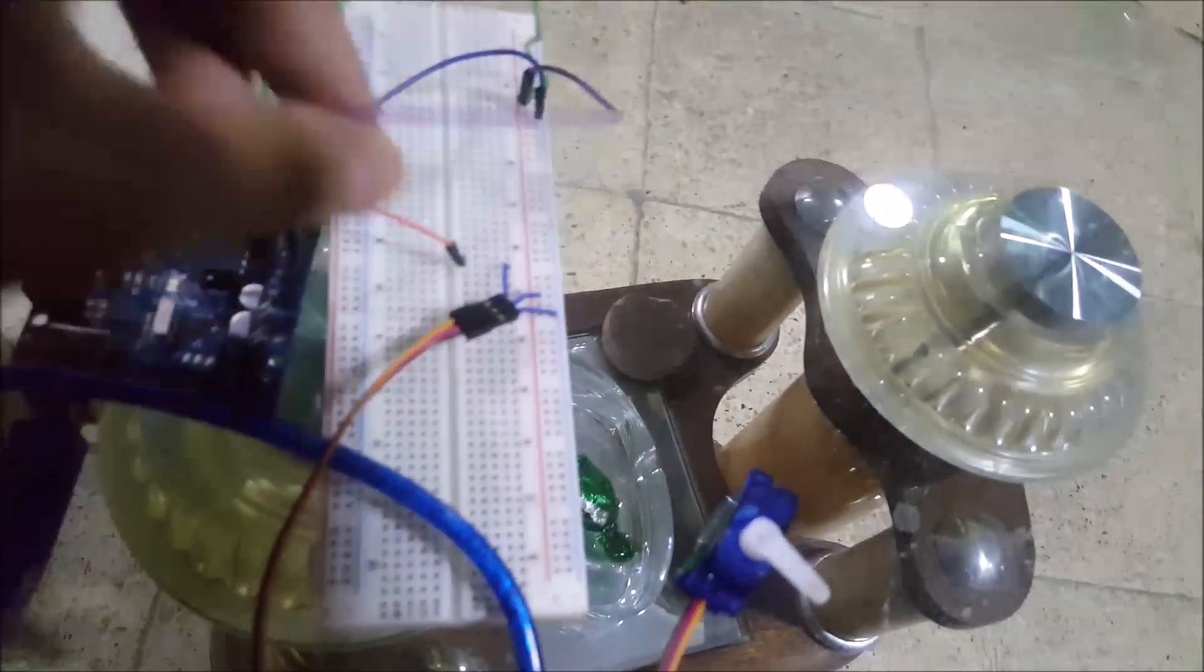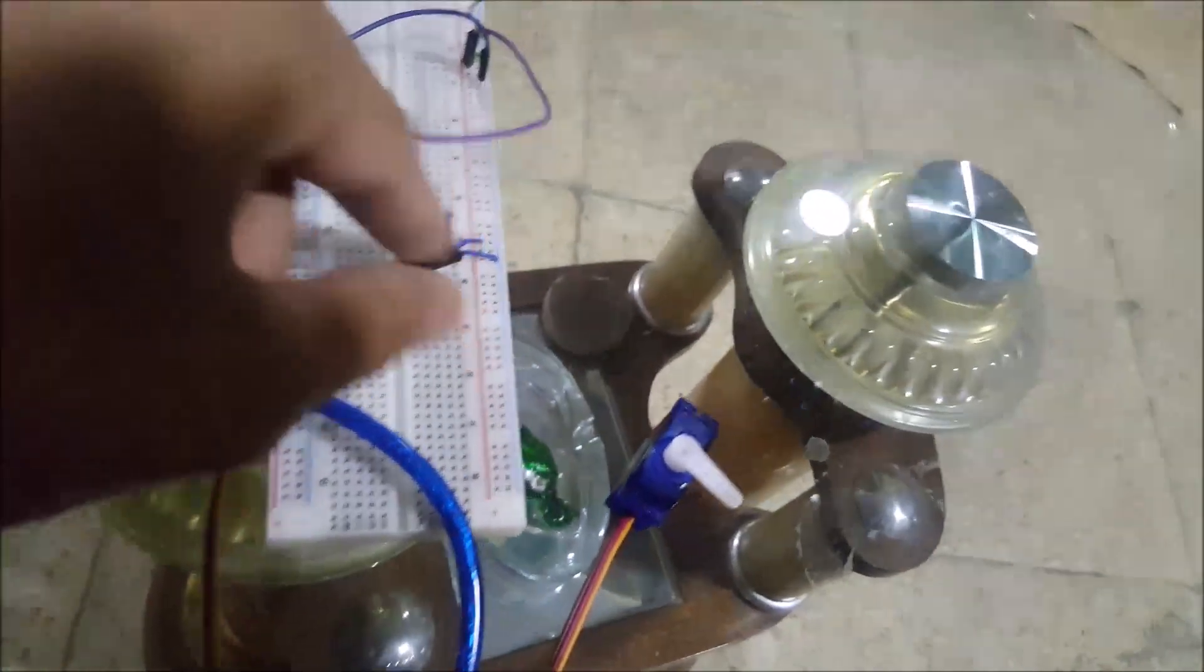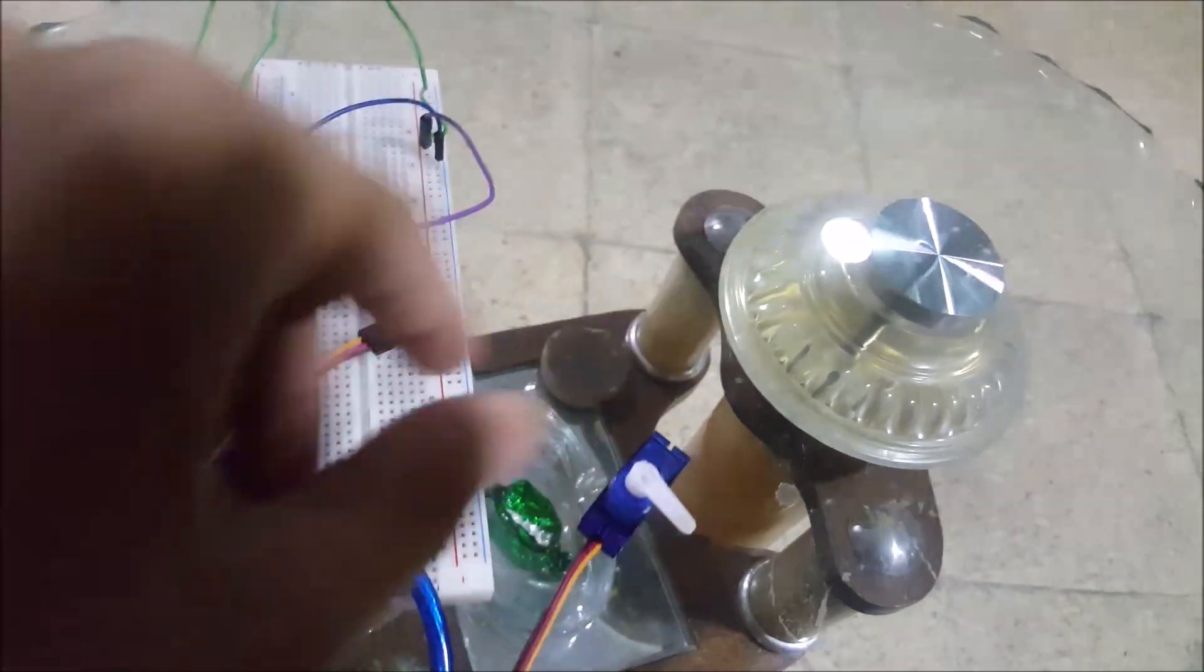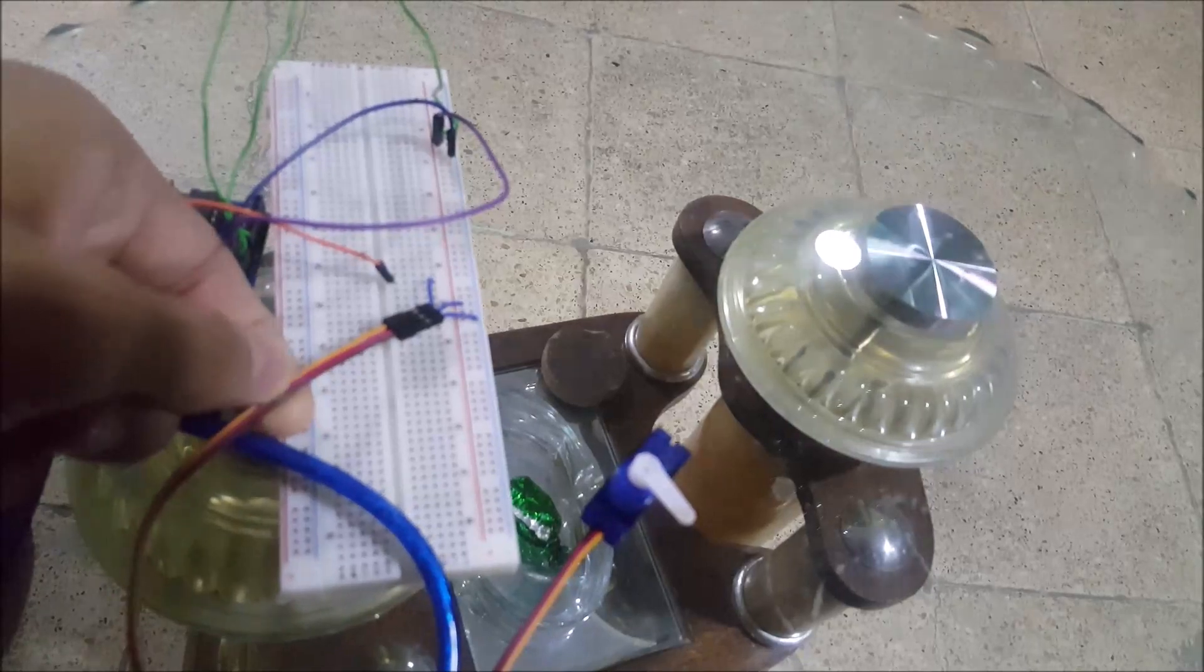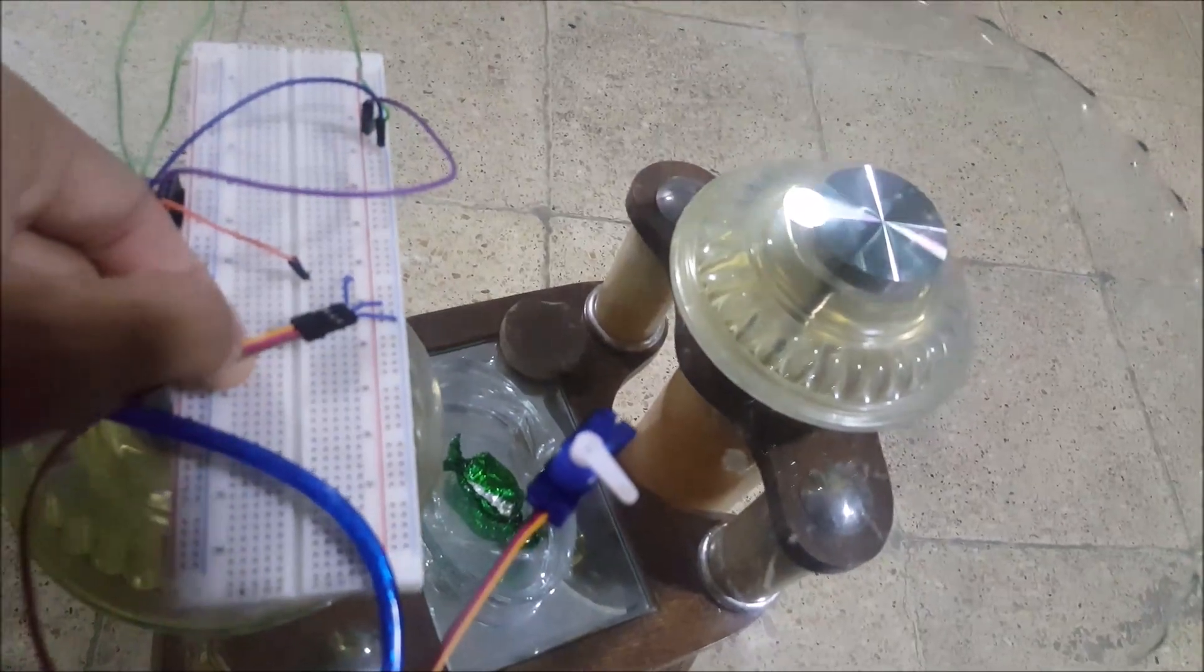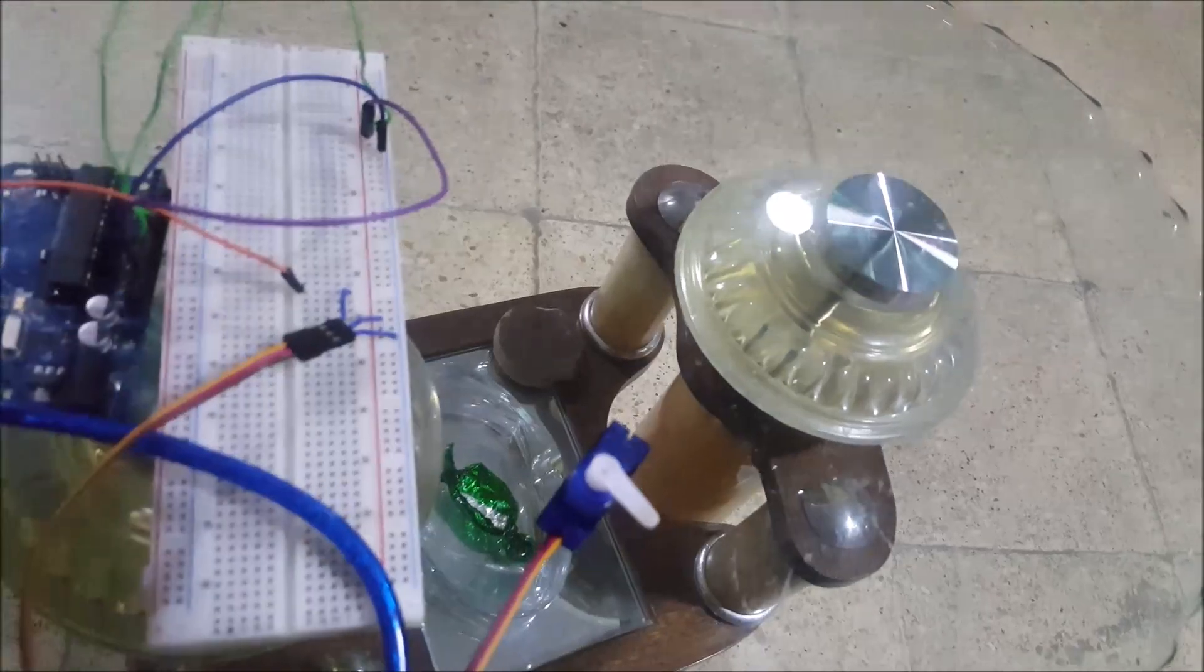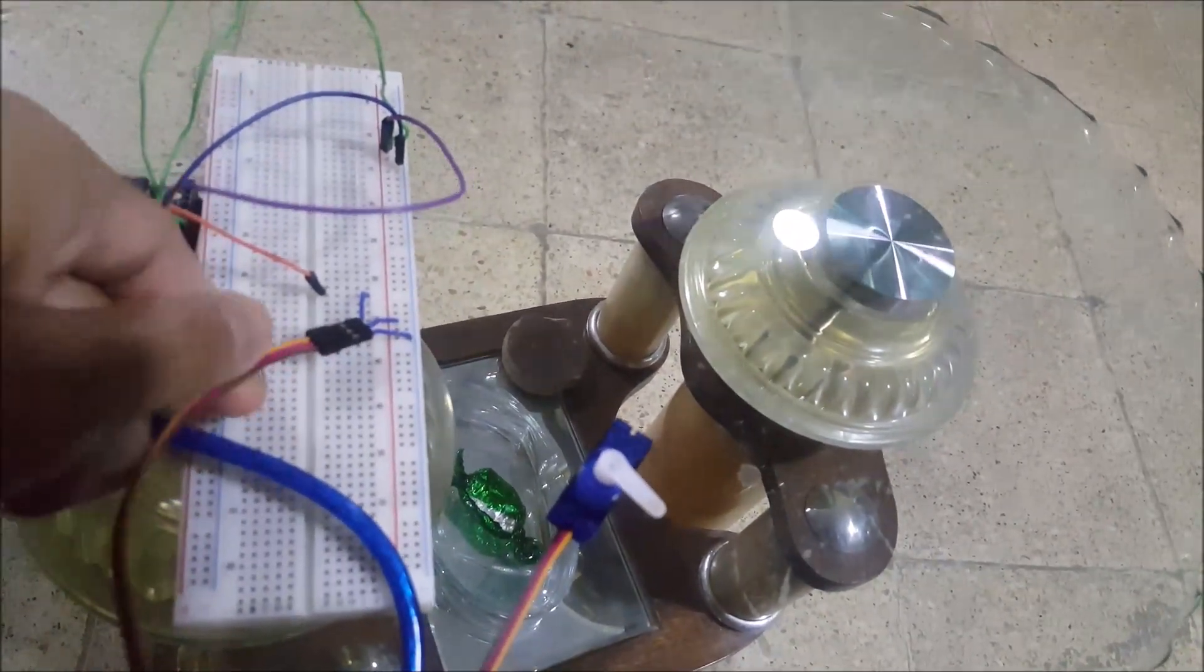For the servo motor, depending on what type you use, check the data sheet for the wiring. This one has it laid out for you from the color of the wire. The yellow one is the data pin, this goes to digital pin 7. The red is 5 volts and the brown one is the ground.